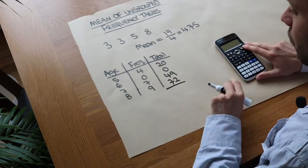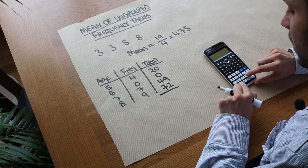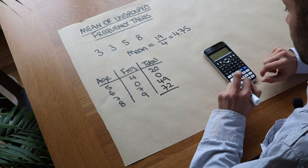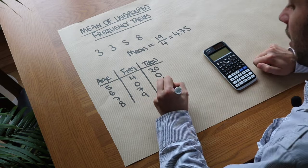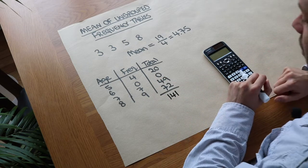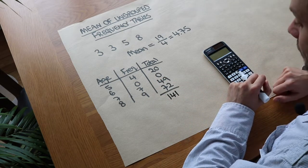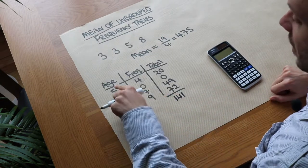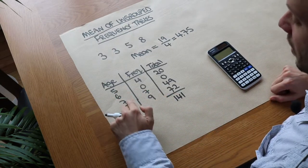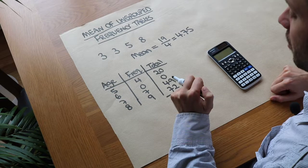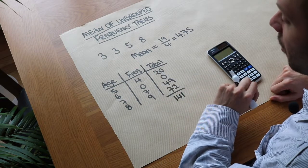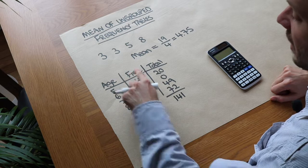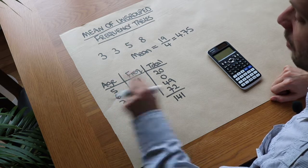Then we can find the grand total of the ages: 20 plus 0 plus 49 plus 72 is 141, so the total of the ages is 141. Now we need to divide by how many people there are. A common mistake is to divide by four because there are four rows, but that's not the number of people.